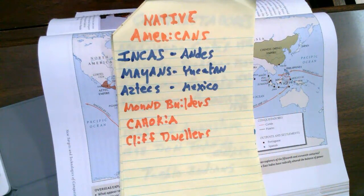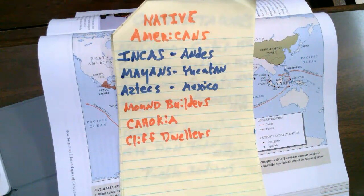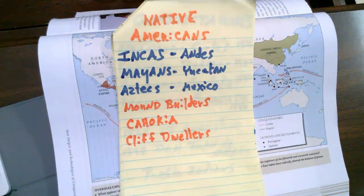Then we have the Aztecs, who were around Mexico City. A large population of at least one million, perhaps more, led by individuals such as Montezuma.